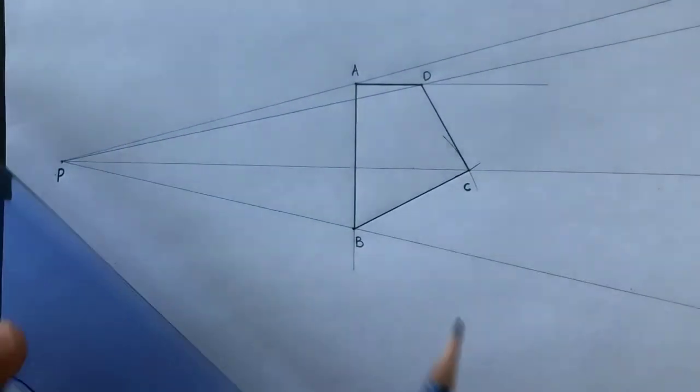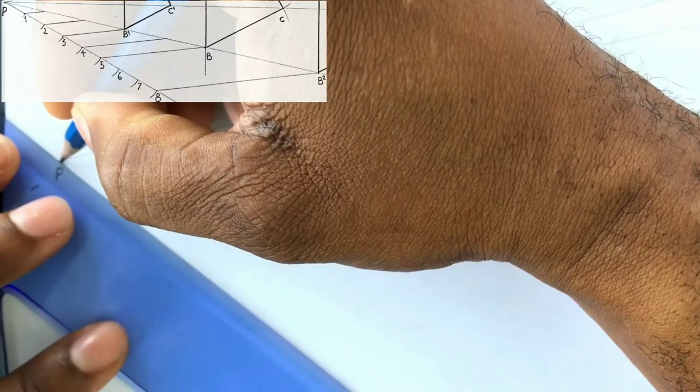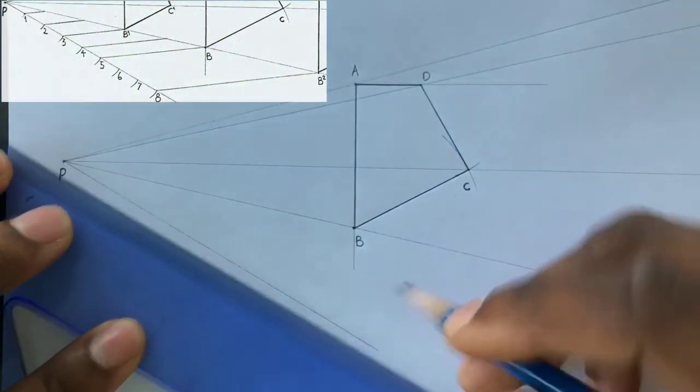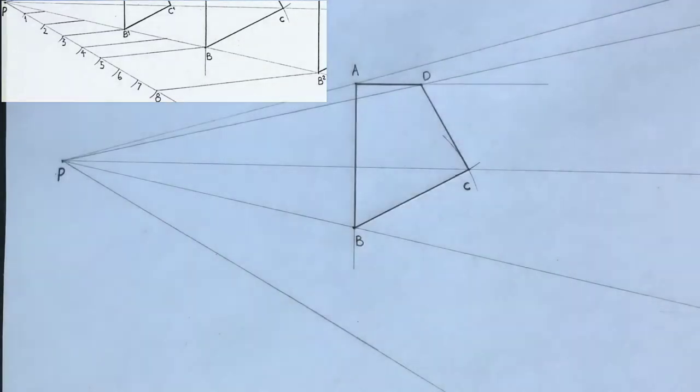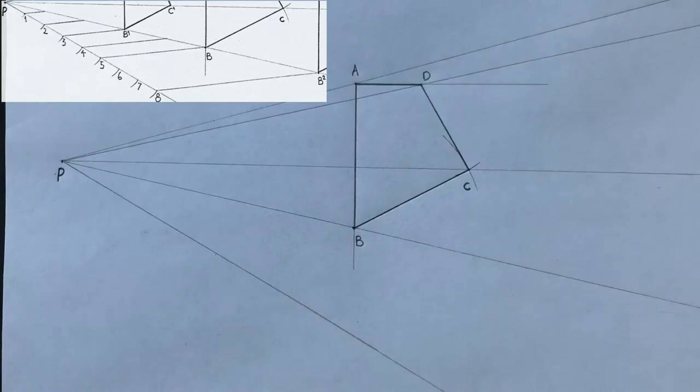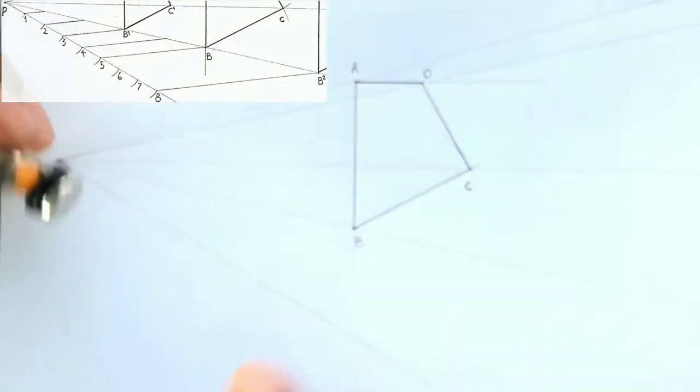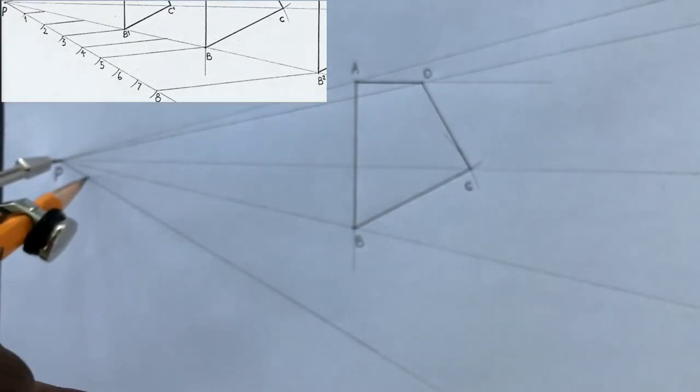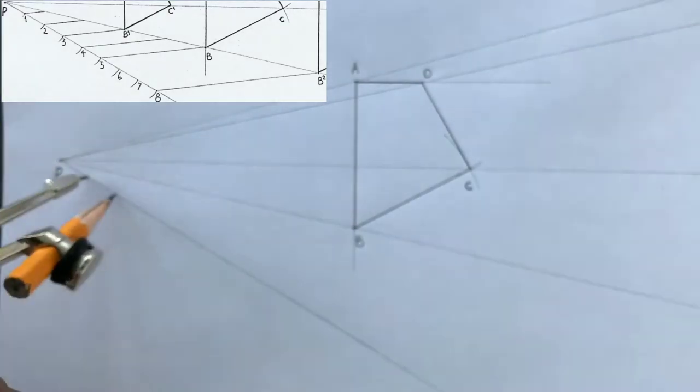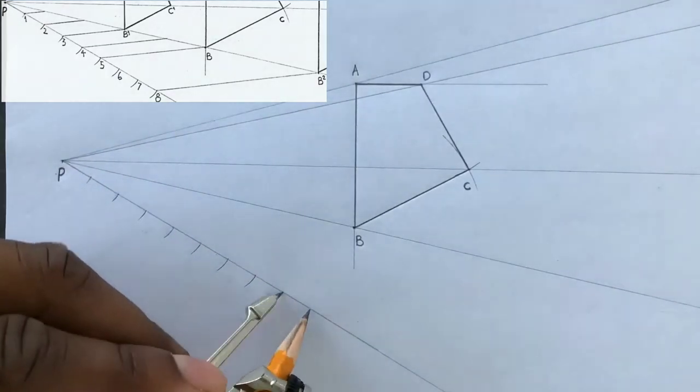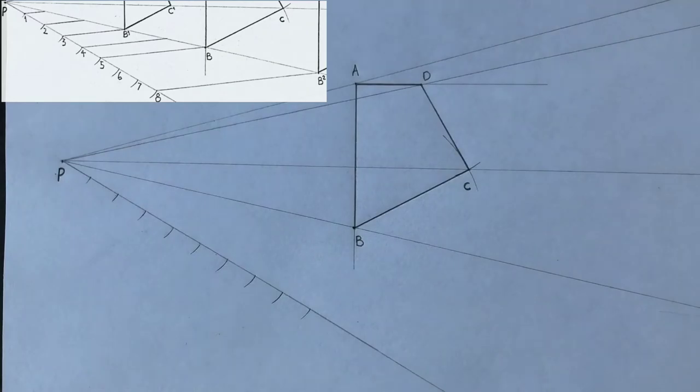Now from point P, draw a line at a convenient angle to you. Now divide this line into eight equal parts. Open your compass to a convenient radius and scribe arcs to intersect this line that are equally spaced. Now label the intersection of arcs from one to eight.